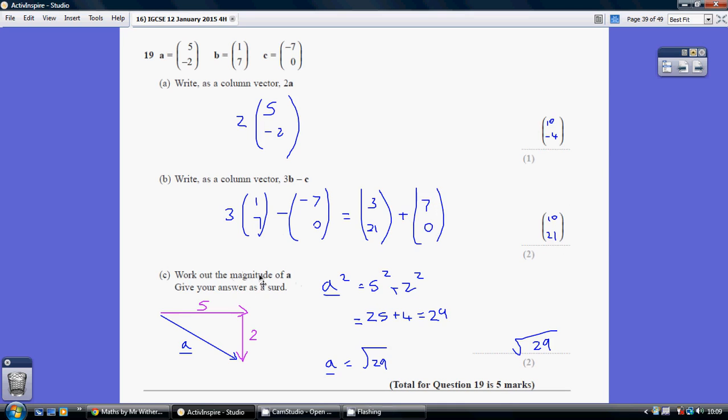Now work out the magnitude of the vector A - that just means the size of it. So let's go back to what A is actually telling us. This is telling us 5 to the right and 2 down. So I suggest you do a quick sketch to gather your thoughts. 5 to the right and 2 down. What's the net effect of these two forces?